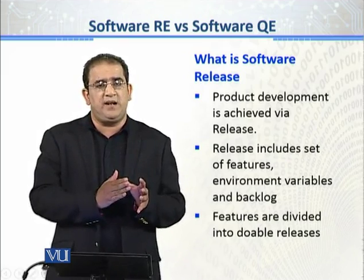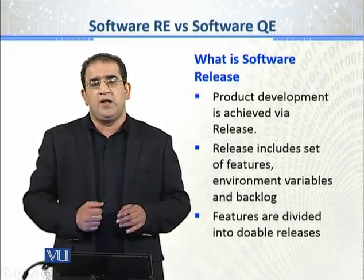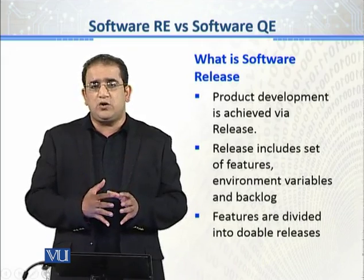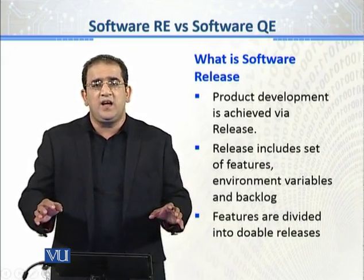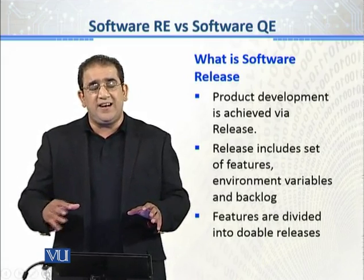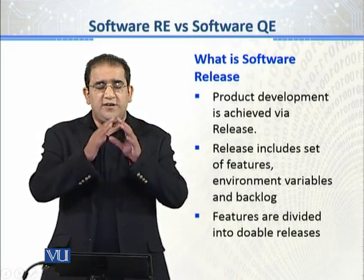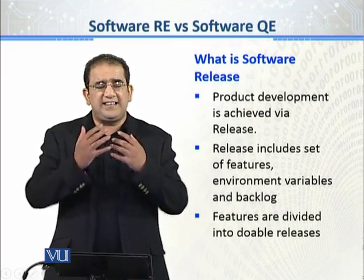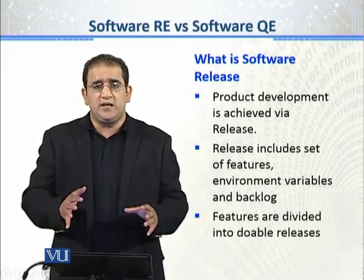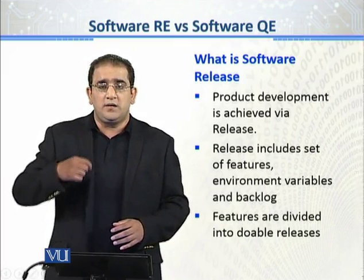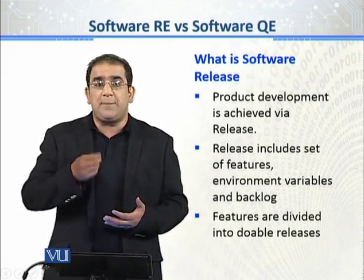तो ये तीन चीज़ें मिलके कोई भी release बना करती है. और अमूमन features को हम divide करते हैं into different releases, यानि feature को हमने estimate किया, estimate करने के बाद we divided the features into doable releases या doable project plan.